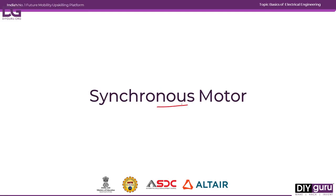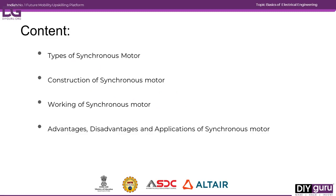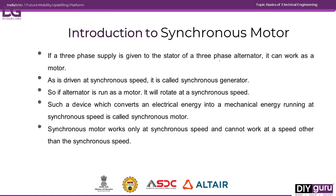In this session we are going to see about synchronous motors — different types, construction, working, advantages, disadvantages, and applications. When a three-phase supply is given to a three-phase alternator, it will work as a motor. When the speed of the alternator is around synchronous speed — for example 1500 RPM — it is called a synchronous generator. If the alternator runs as a motor, it rotates at the same synchronous speed. Such a device which converts electric energy into mechanical energy and always runs at synchronous speed is called the synchronous motor.